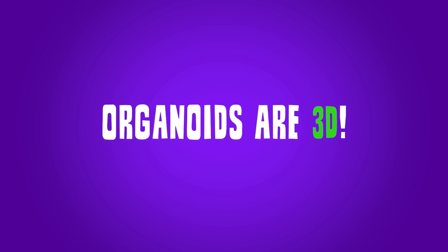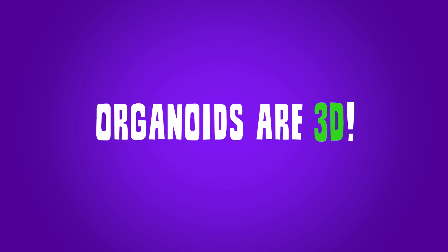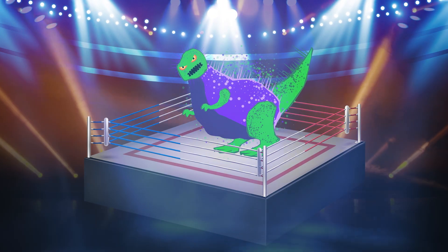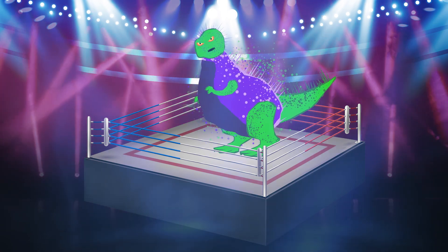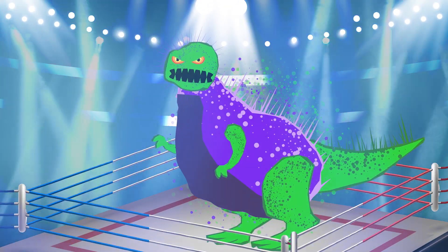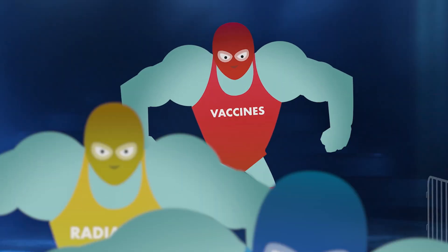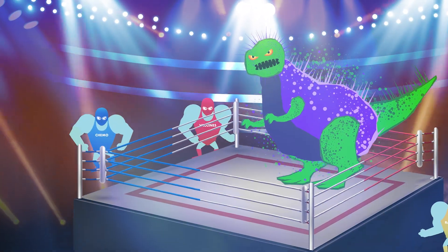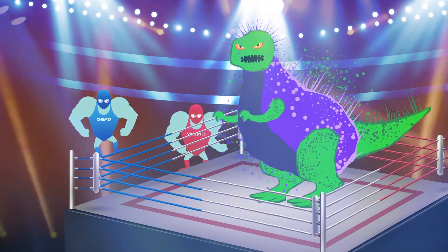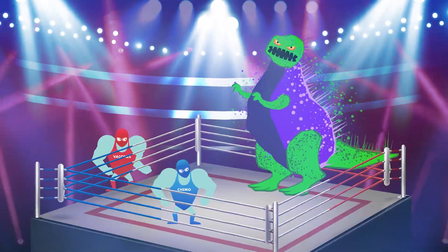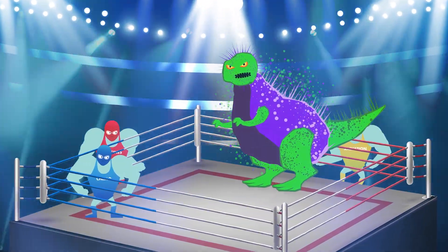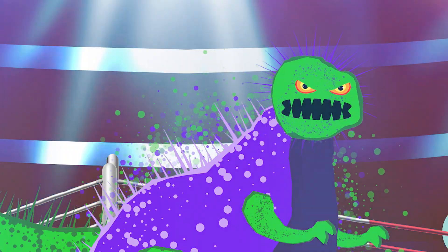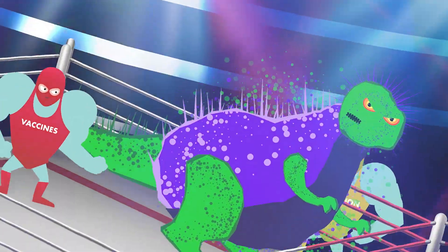Organoids are 3D constructs designed to replicate the environment of an organ in the body. Think of this wrestling ring as our organoid. First, we add a simple version of a tumor, and then introduce different methods to fight it. Using organoids in this way has helped us refine different methods of treatment, such as chemotherapy, radiation, and vaccines. But even traditional organoids have their limits.